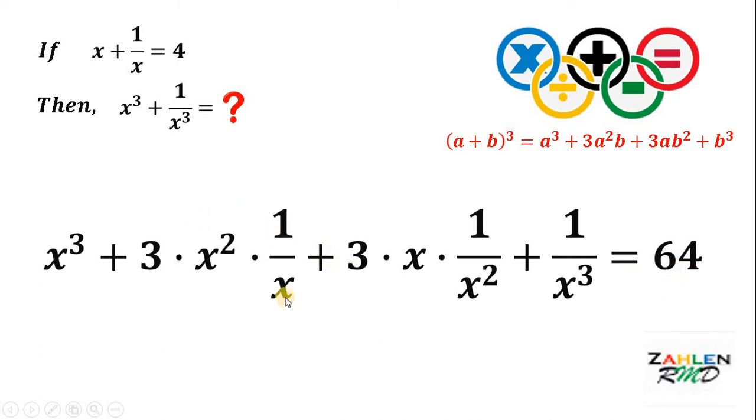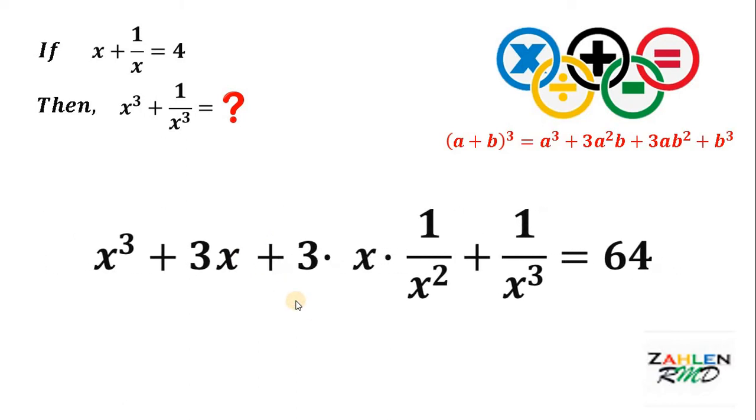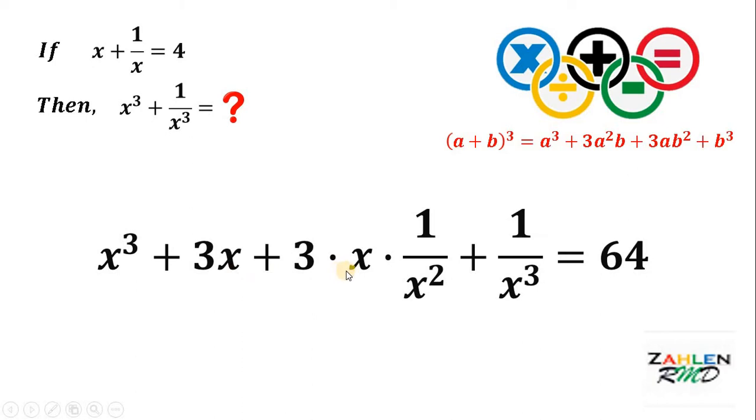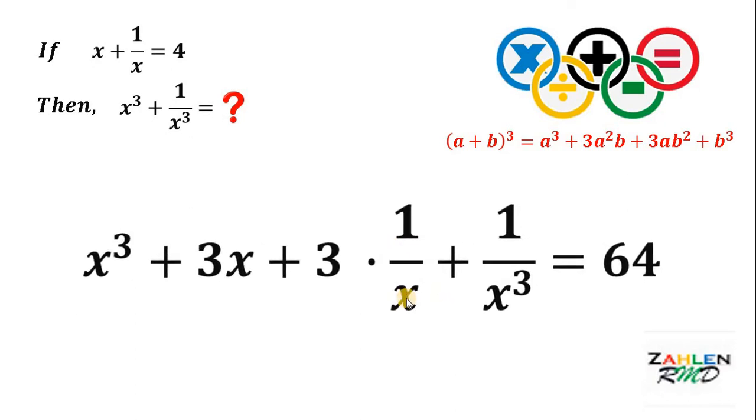On the second term, we have x squared times 1 over x. If we simplify this, this is just the same thing as x. And on the third term, we have x times 1 over x squared. x times 1 over x squared will give us 1 over x.